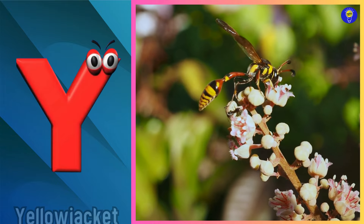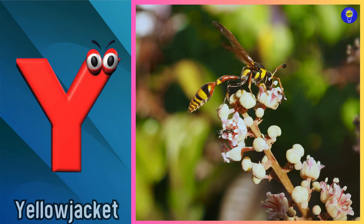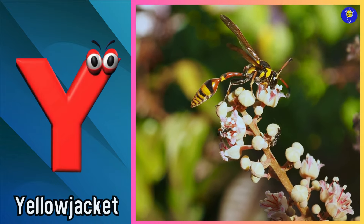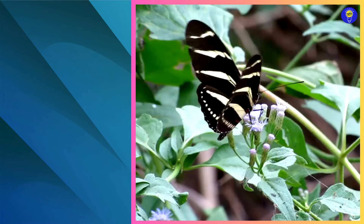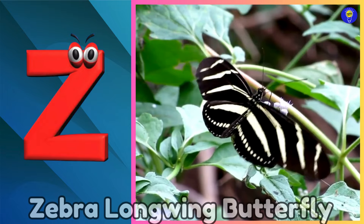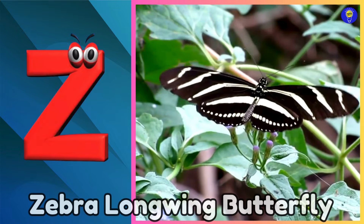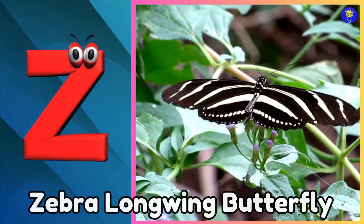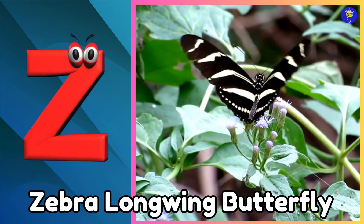Y is for yellow jacket. Y, y, yellow jacket. Z is for zebra longwing butterfly. Z, z, zebra longwing butterfly.